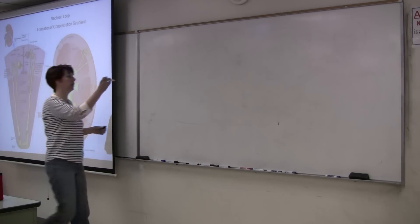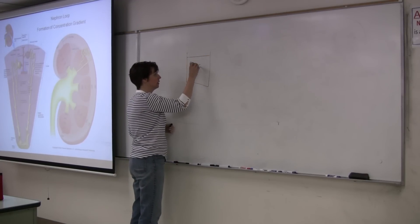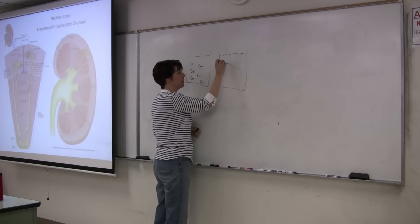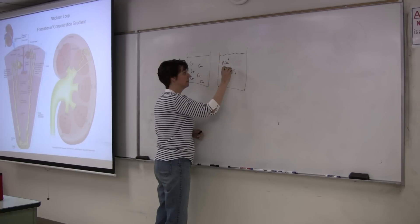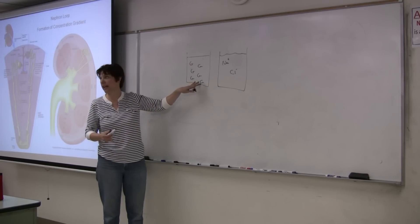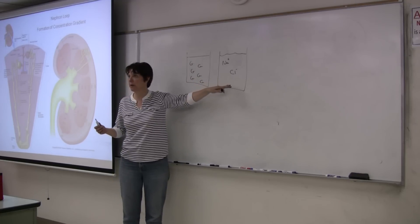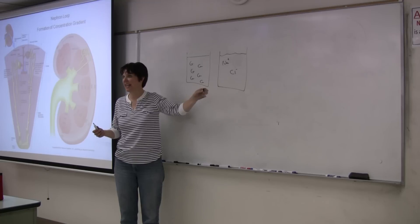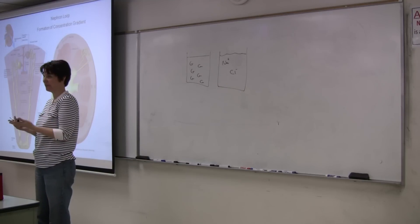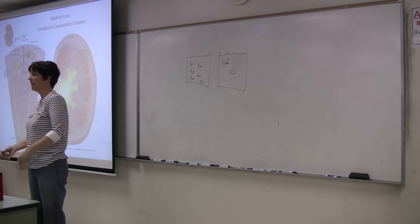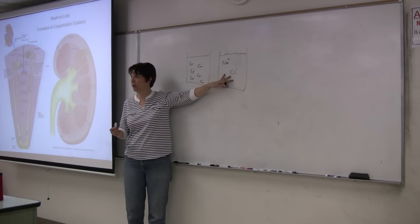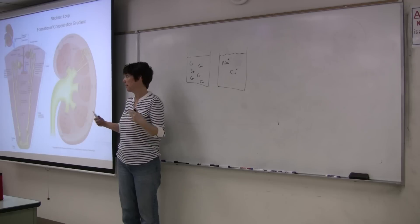If I take 100 molecules of glucose and dissolve them in water, the glucose stays as molecules. But 100 molecules of salt will dissociate — so instead of 100 particles, I have 200. That doubles the osmolality. Osmolality is a relationship of the number of particles in a given volume: the lower the number of particles, the lower the osmolality; the higher the number, the higher the osmolality. Because sodium chloride dissociates into two ions, it has a higher osmolality even though we started with the same number of original particles.